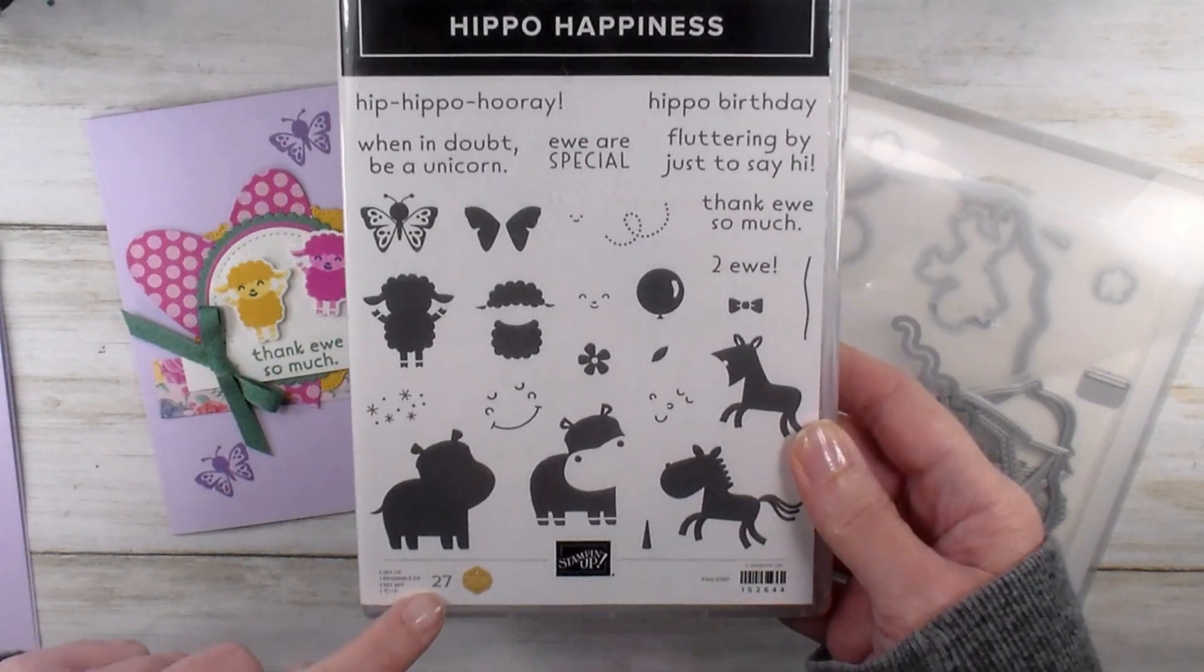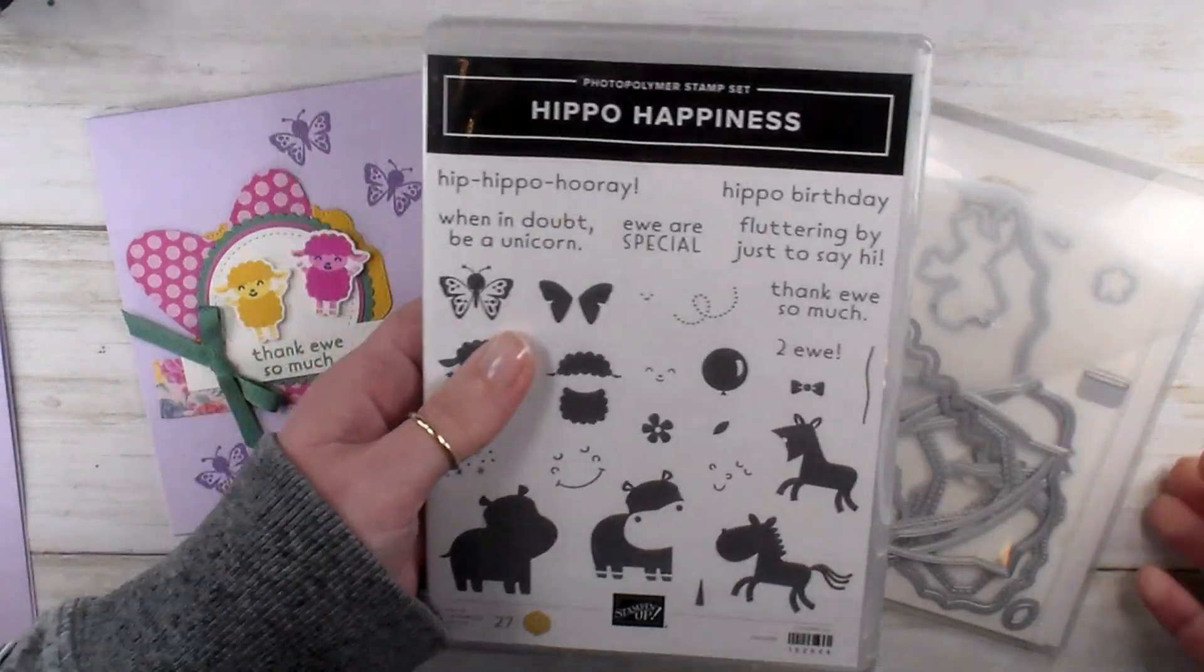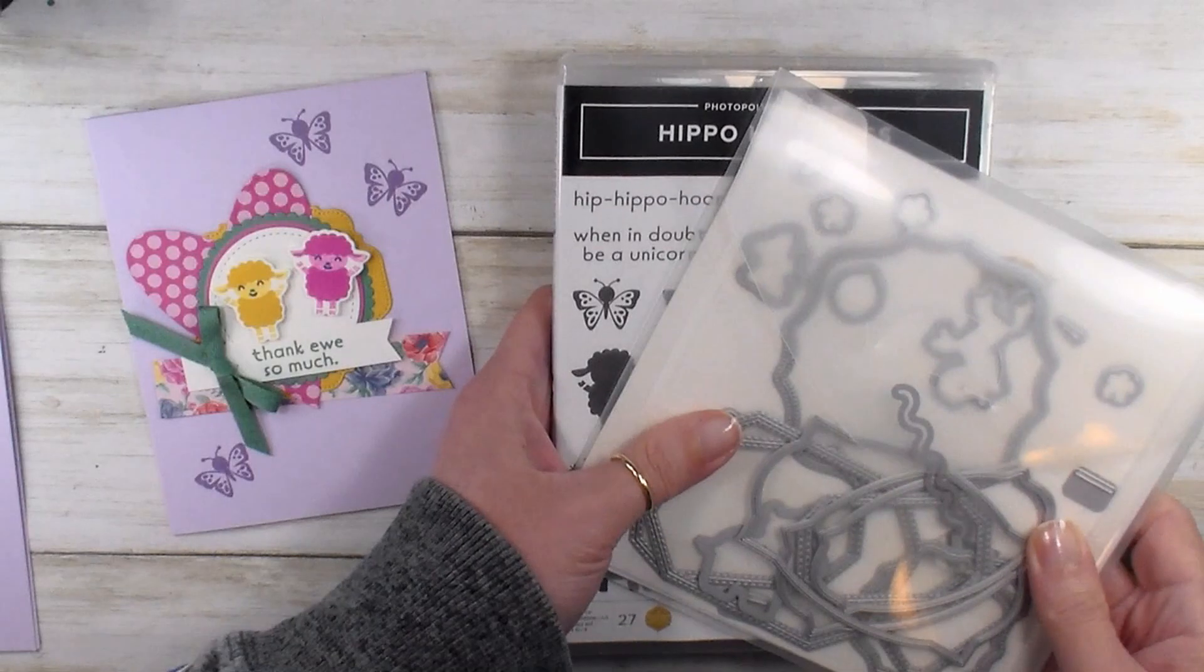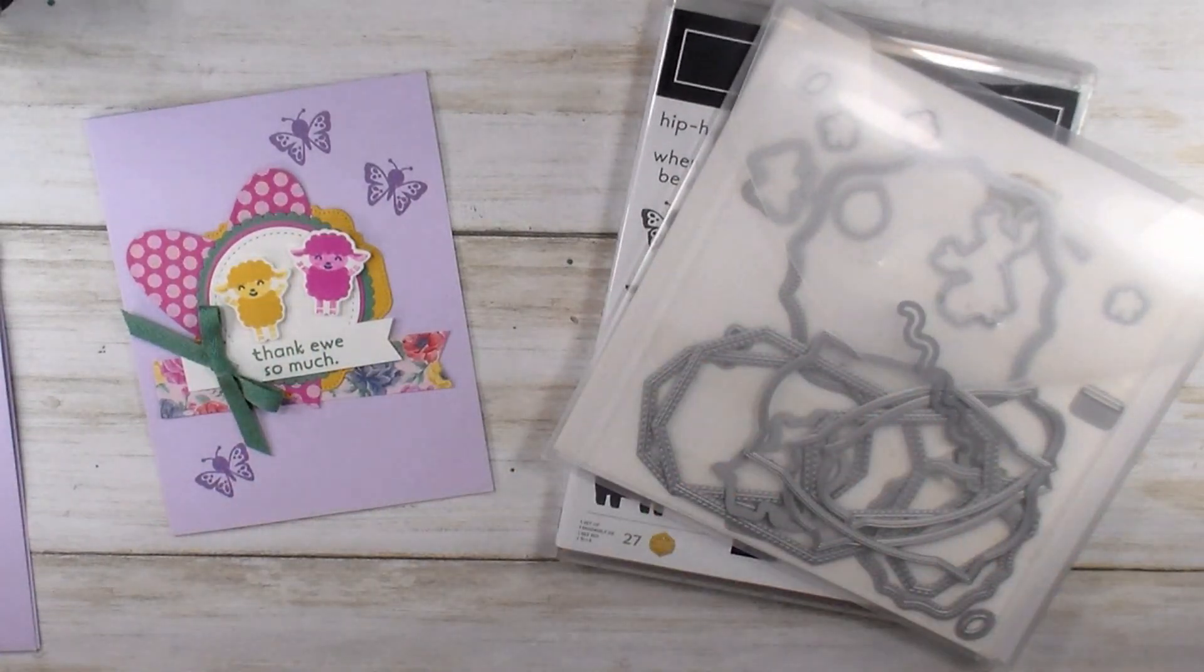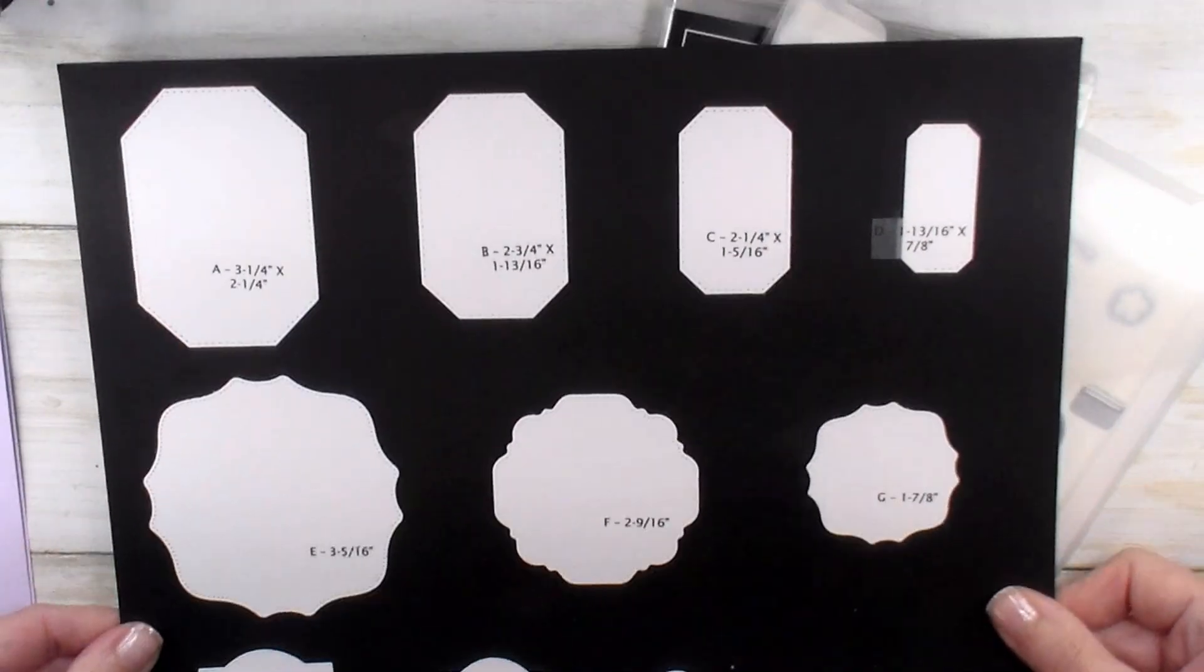The Hippo Happiness stamp set is a 27-piece photopolymer stamp set, and you can bundle it up with the Hippo and Friends dies. Now this die set is amazing. Let me show you a little resource here.